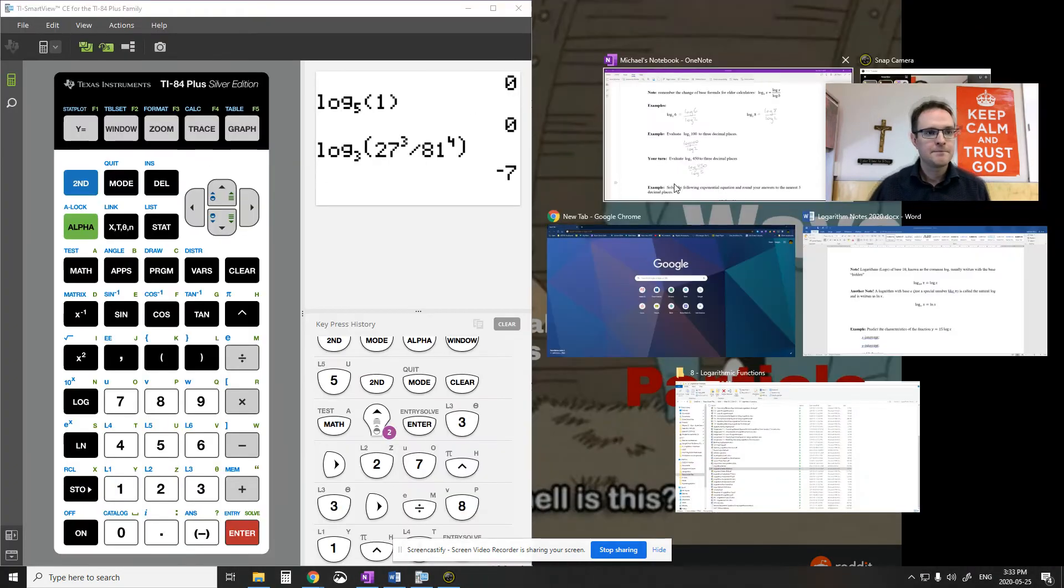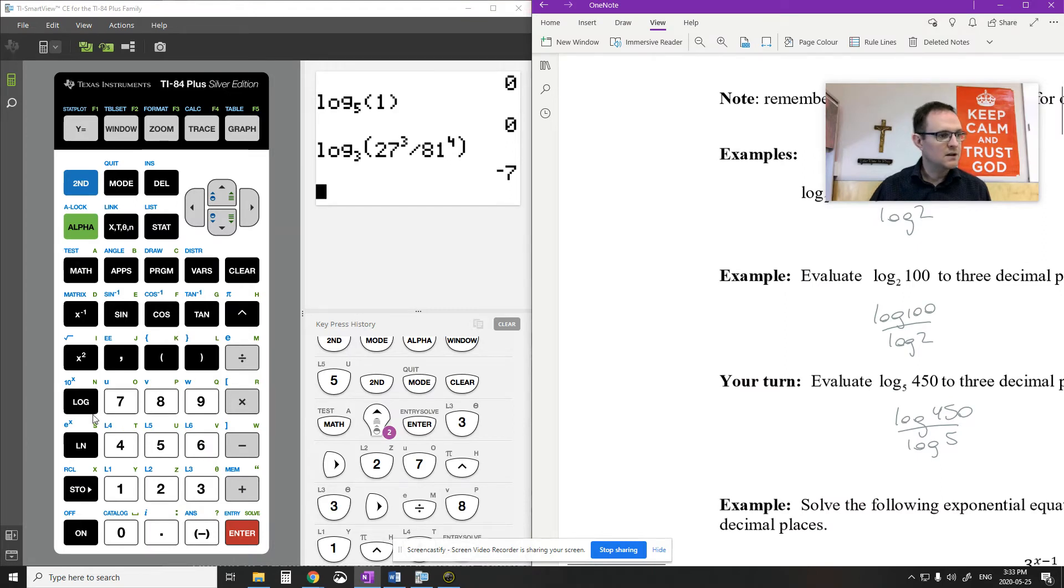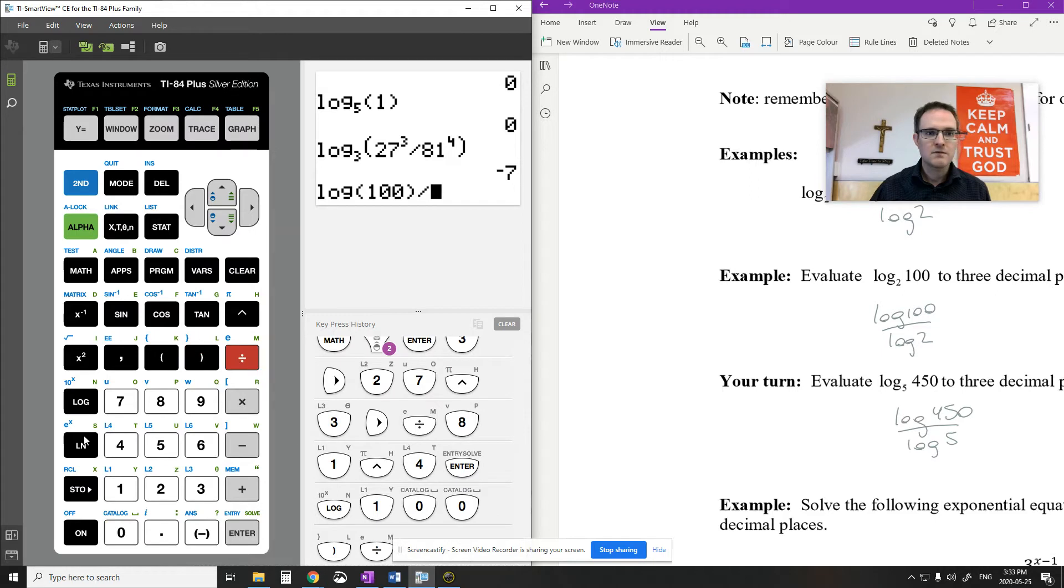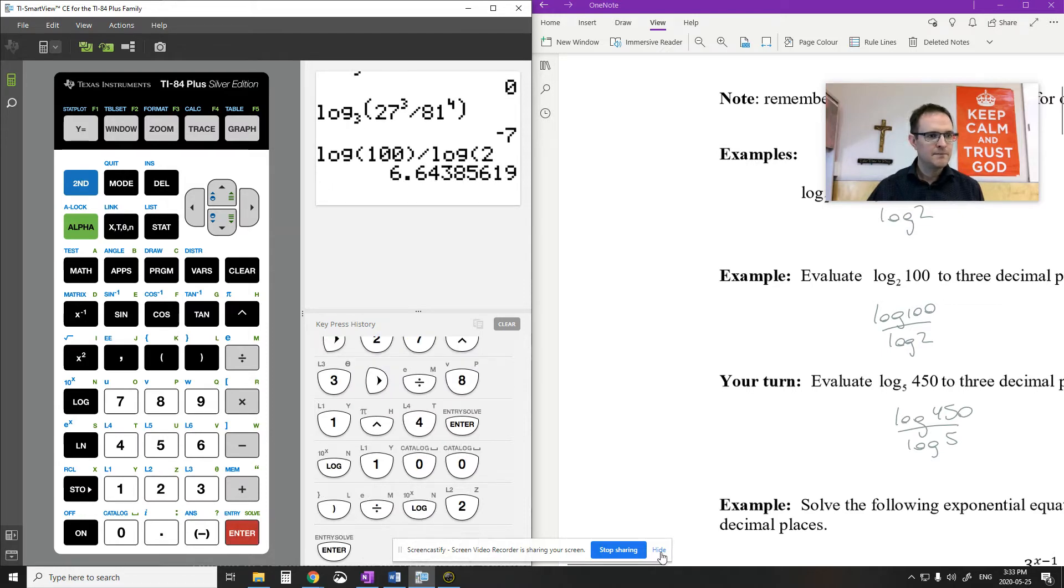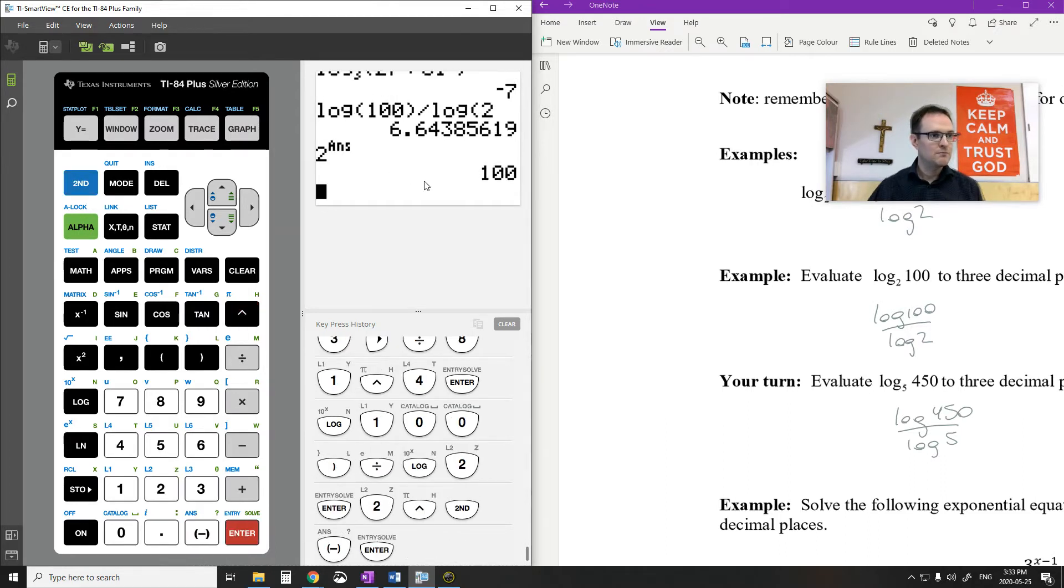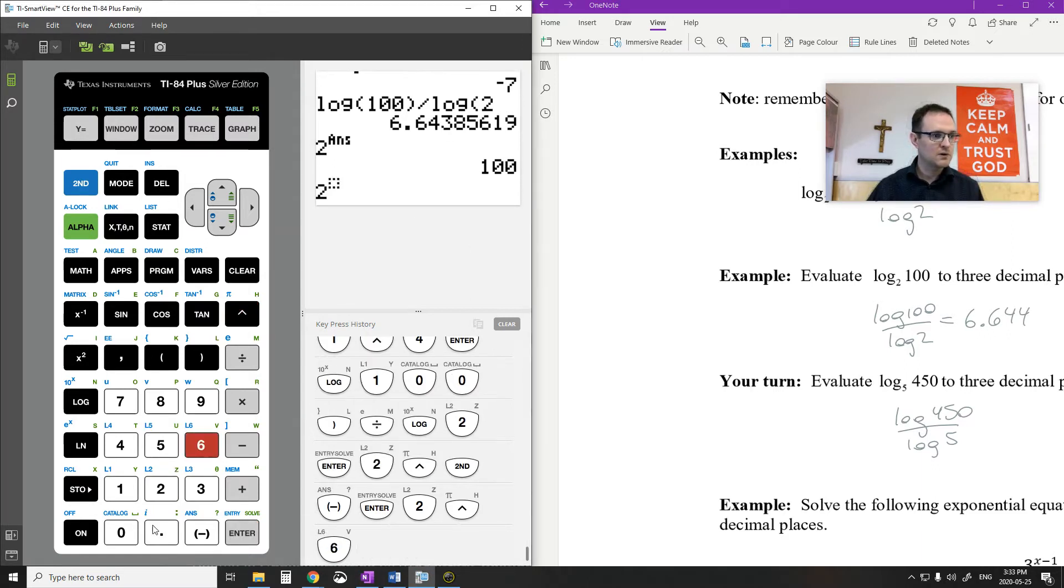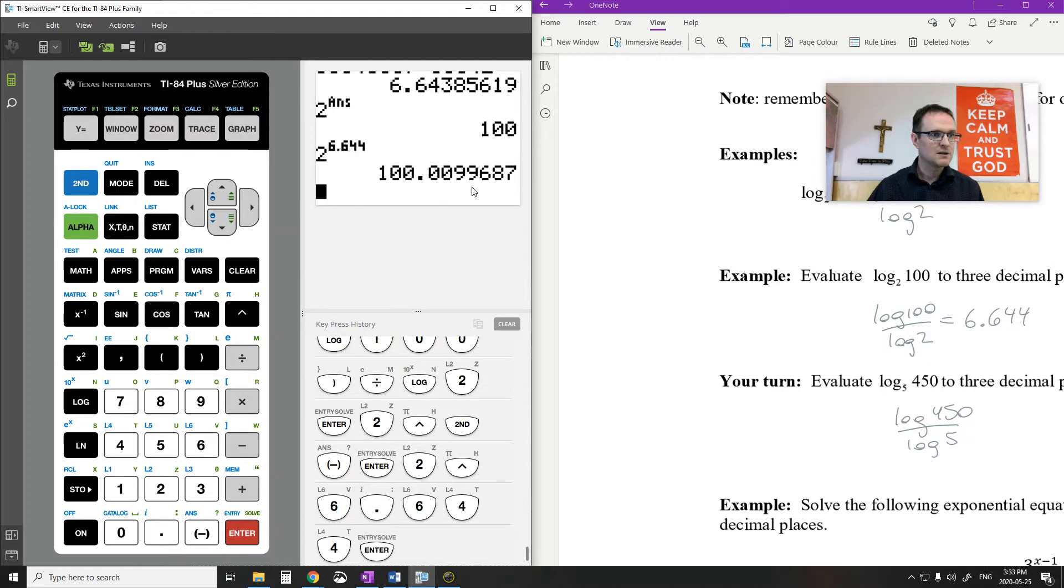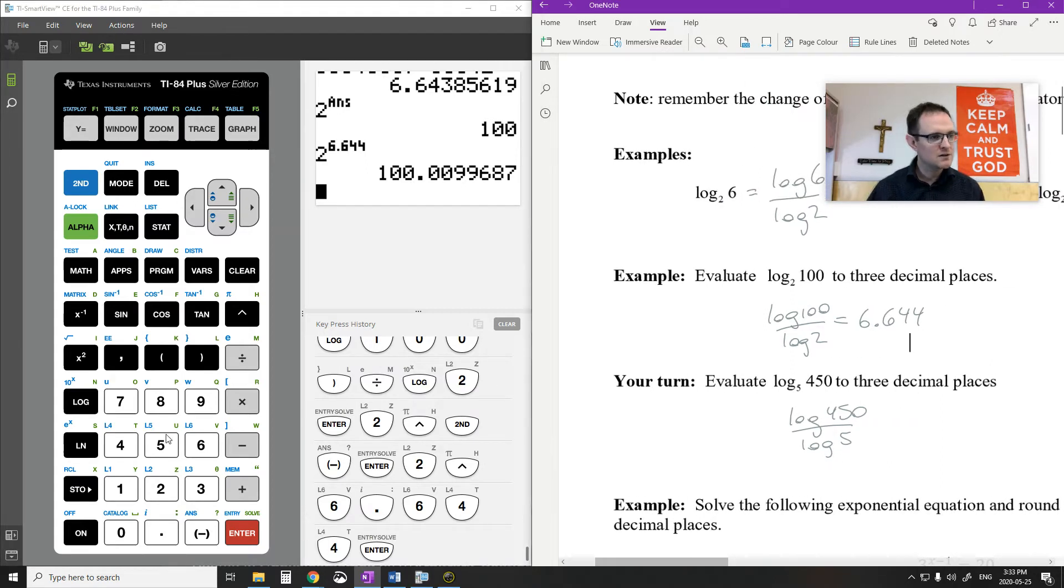Let me pull up my calculator. Let's do log 100 divided by log 2. So you're thinking 2 to the power of something is equal to 100. So 2 to the power of 6.644, if I go 2 to the power of this answer, I should get 100 out. So this ends up being 6.644.